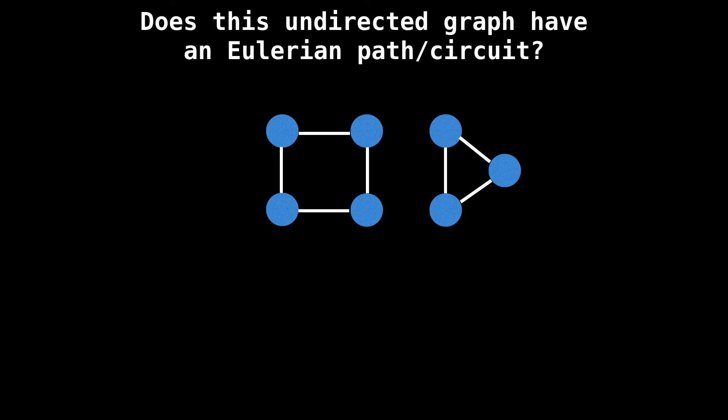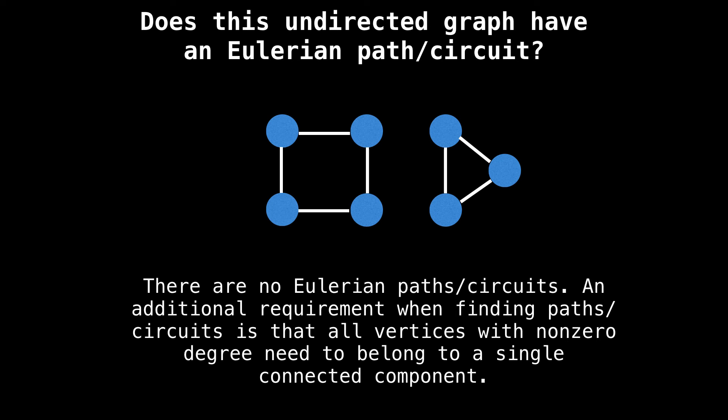Here's another one. Are there any paths or circuits in this graph? This one is a bit of a trick question, but there are no Eulerian paths or circuits here. And the additional requirement I have not yet mentioned is that when finding paths and circuits, all vertices with non-zero degree need to belong to a single connected component. And here we have two connected components, so we cannot have an Eulerian path or circuit.